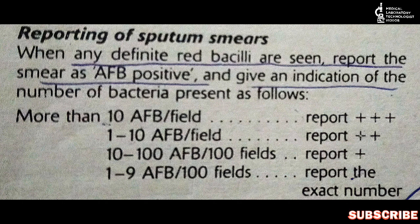If you see only 1 to 9 acid fast bacilli per hundred fields — meaning in a hundred fields you saw only 7 acid fast bacilli — that time you will report the exact number: for example, '7 acid fast bacilli seen per hundred fields.' So we have to report the field as well. For 3 plus and 2 plus, report per field; for 1 plus and exact numbers, report per hundred fields.